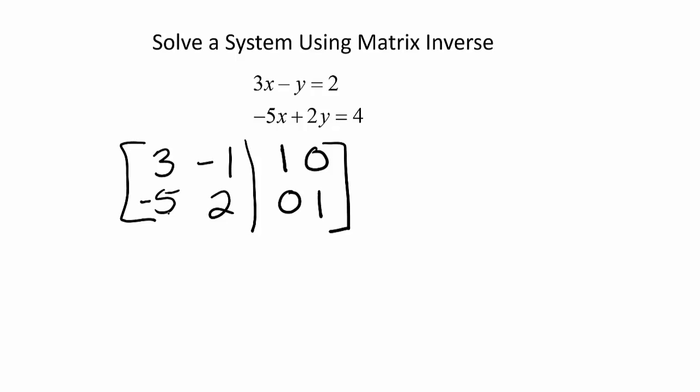Now we will find the inverse. First we multiply the second row by 3. Notice our first row will stay exactly the same.